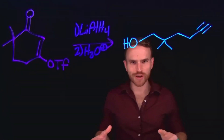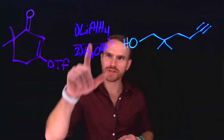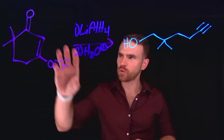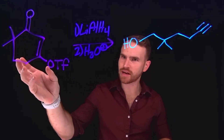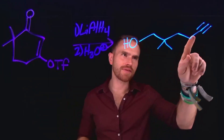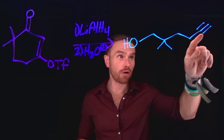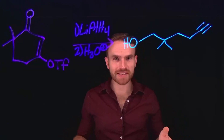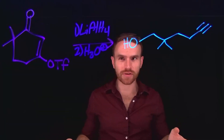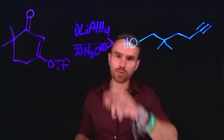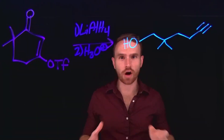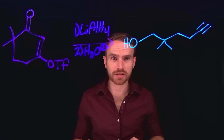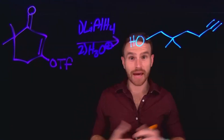In this chemical transformation, we're using lithium aluminum hydride to overall break up this cyclic compound and leave us with an alkyne. This may initially seem counterintuitive because lithium aluminum hydride is often known as a reducing agent for carbonyl compounds.